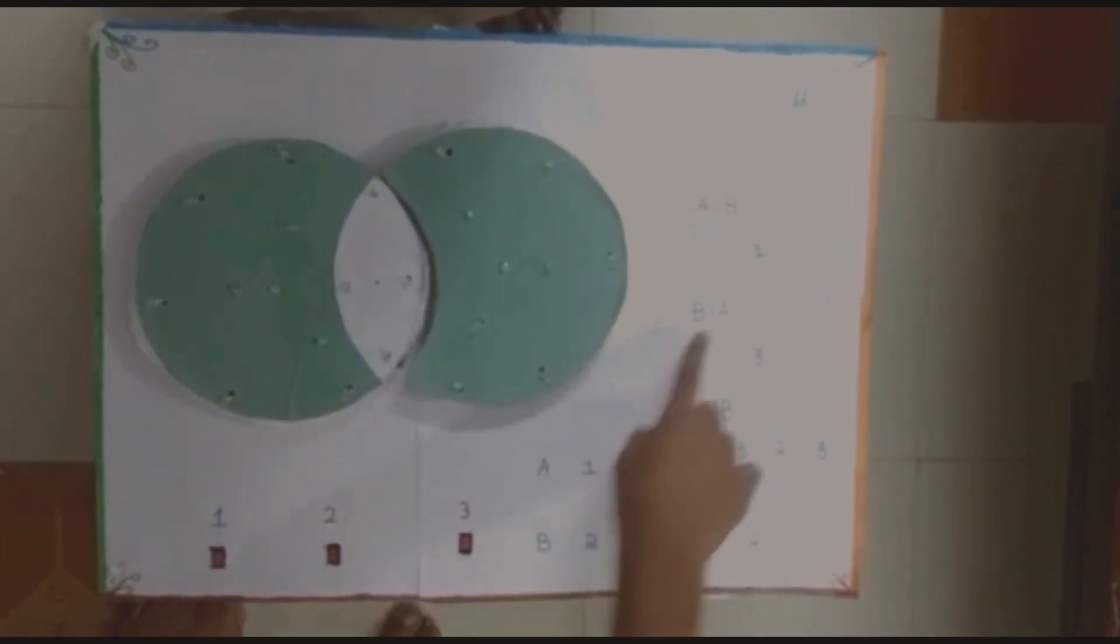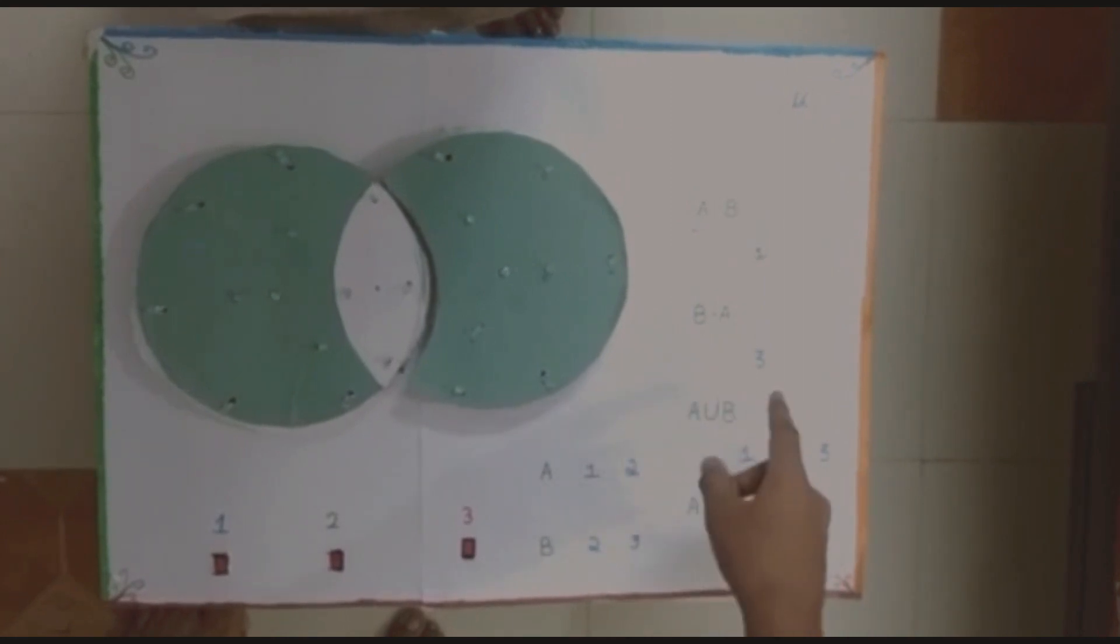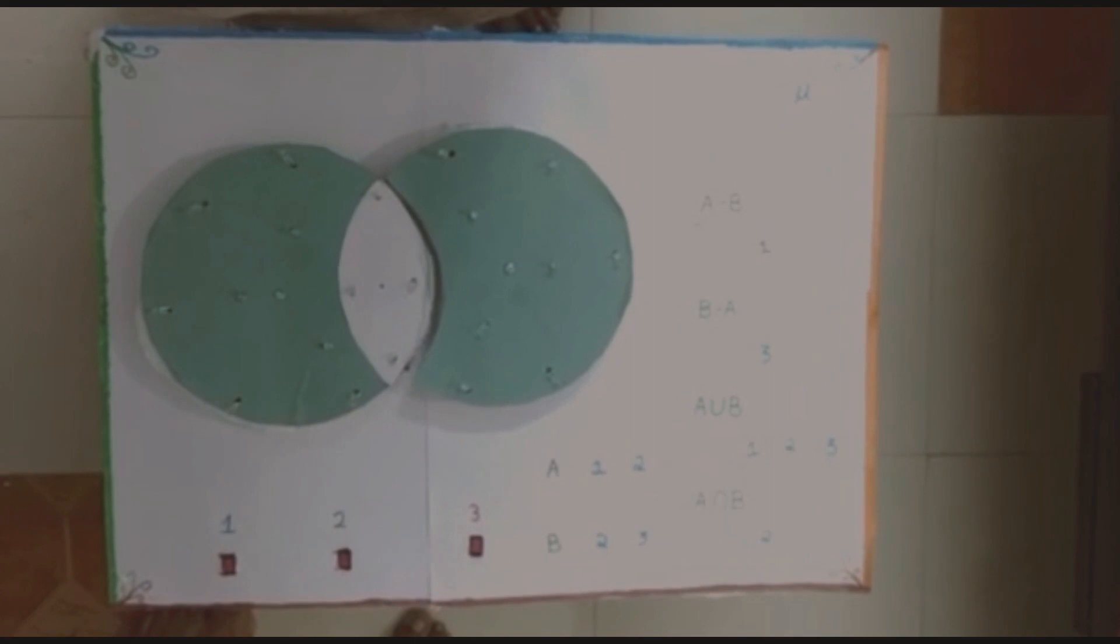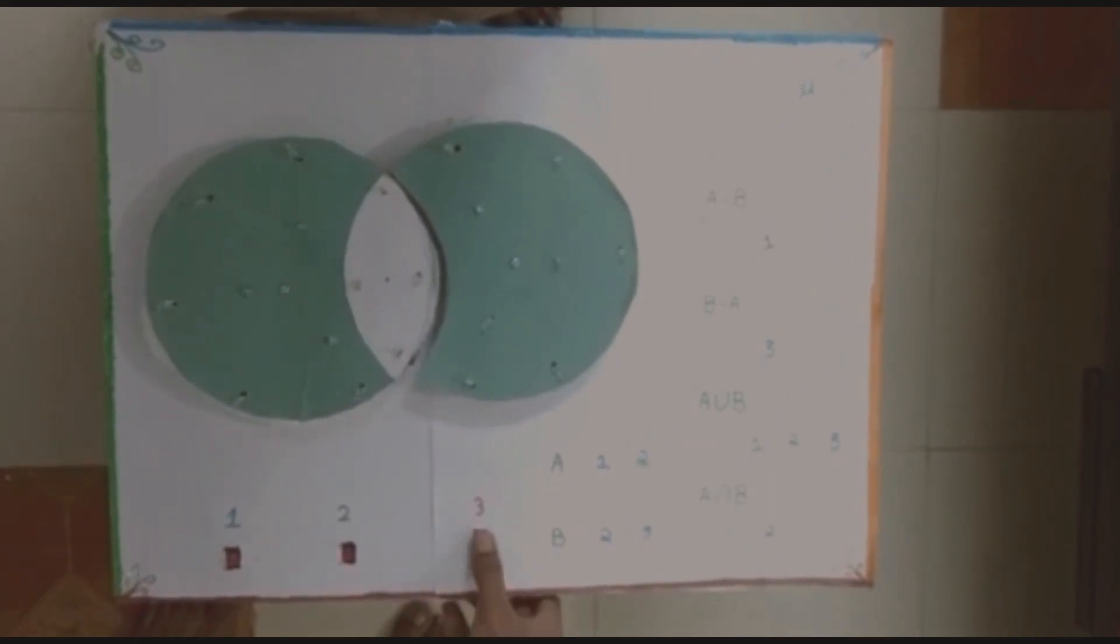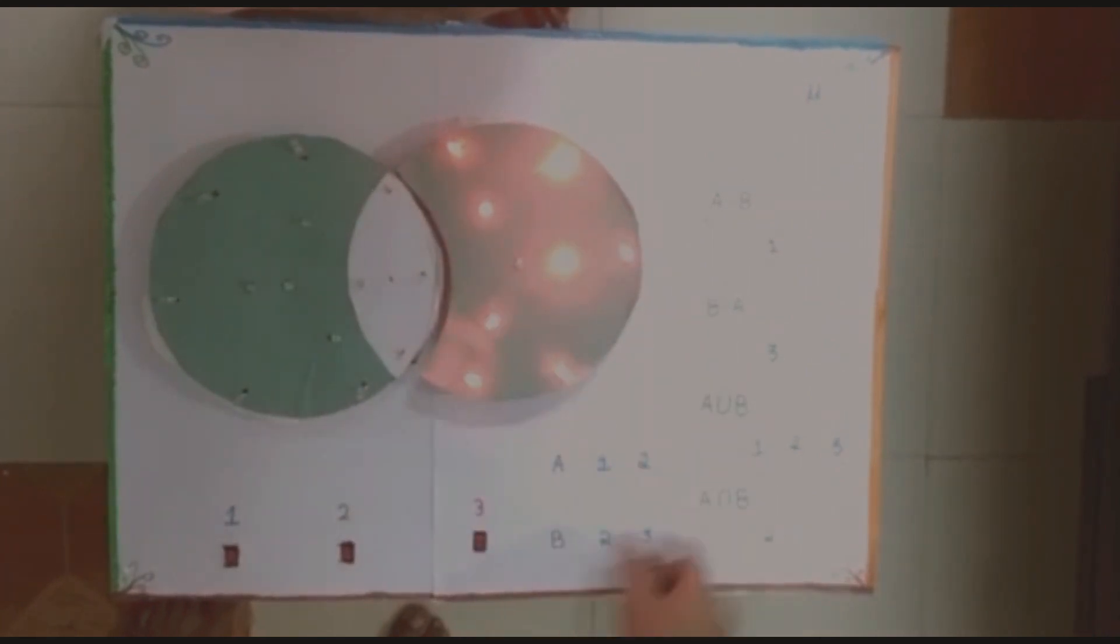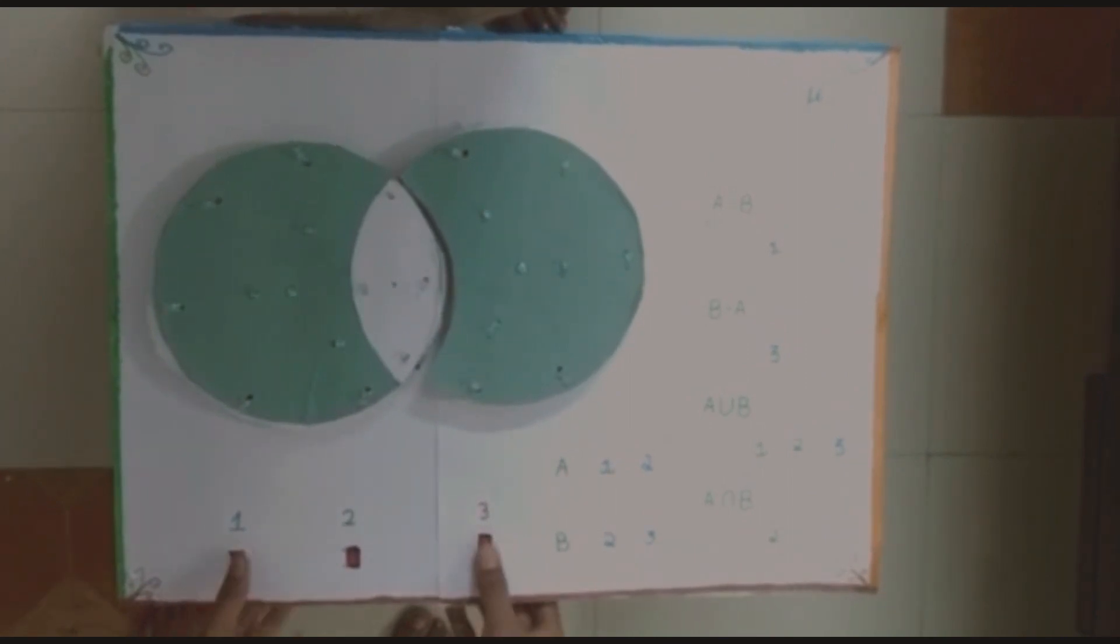And now let's talk about B-A. What does this B-A actually mean? It means taking out similar parts from Set A and highlighting the common elements of Set B.